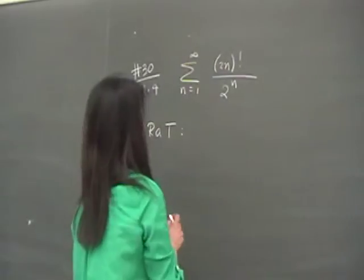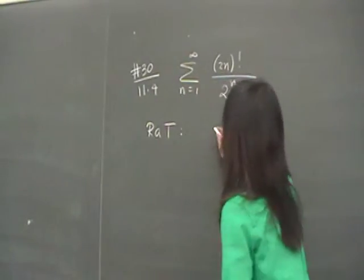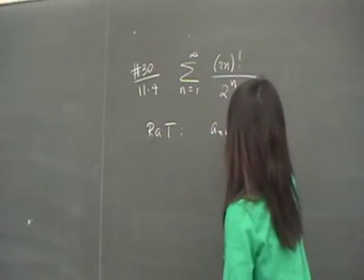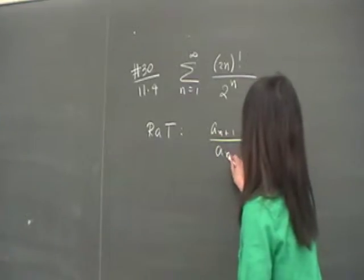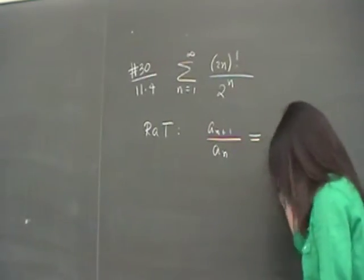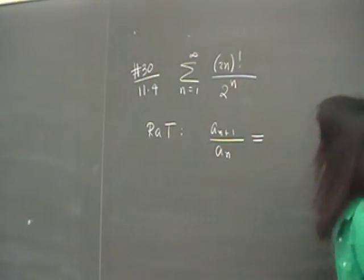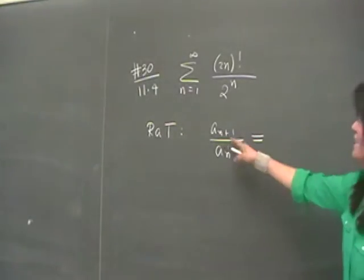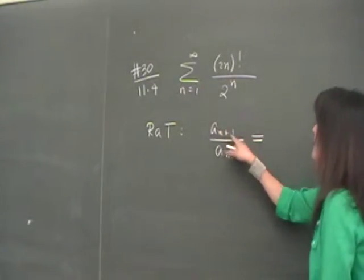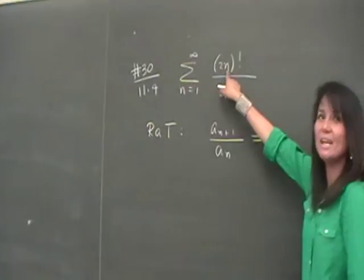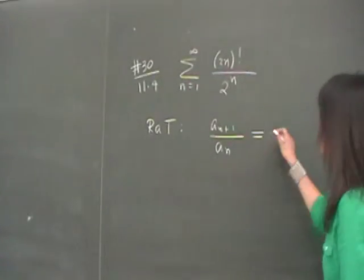How does the ratio test work? n plus 1 over n. You look at the expression a sub n plus 1 over a sub n, and then what do you do? A sub n plus 1 means to replace the n by n plus 1. So let's do that.